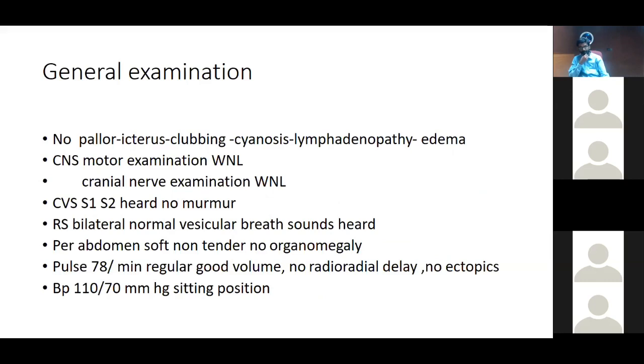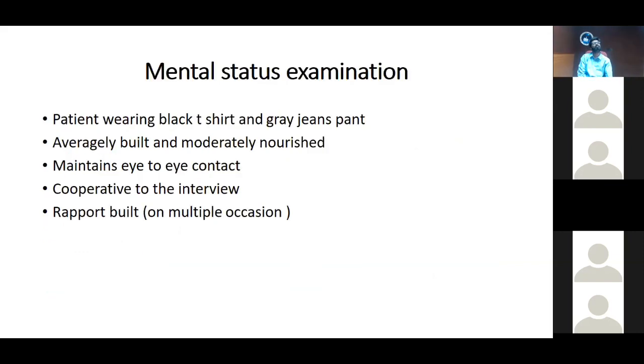General examination: No pallor, icterus, clubbing, cyanosis, lymphadenopathy, or edema. On central nervous system examination, the motor examination was within normal limits and cranial nerve examination was within normal limit. On cardiovascular system examination, S1 and S2 was heard with no murmur on auscultation. On respiratory system examination, bilateral normal vesicular breath sounds were heard. Abdomen was soft, non-tender, and no organomegaly was elicited. The pulse of the child was 78 beats per minute with regular good volume and no radial delay and no ectopics noted. The blood pressure in sitting position was 110 by 70 mm of mercury.